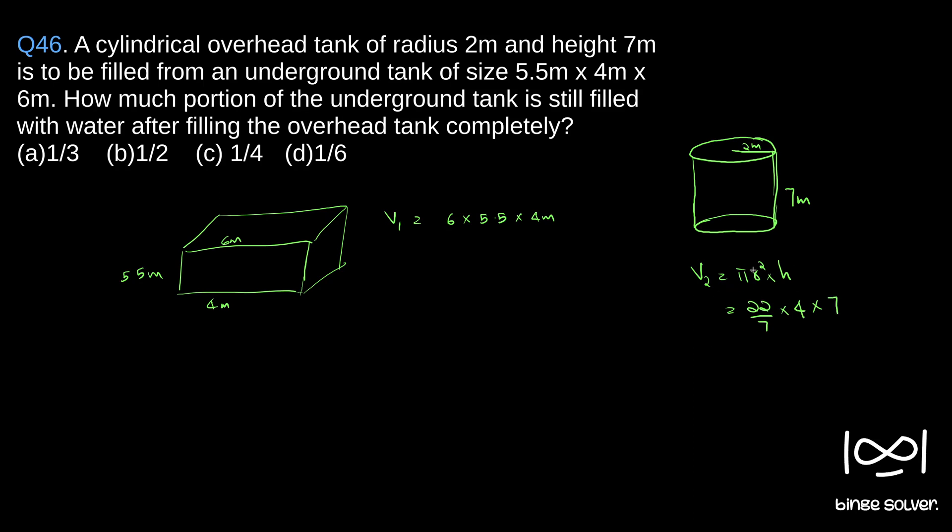in questions like this, the 7 will probably cancel out with some values, otherwise it will give fractions and a complicated answer. Usually it cancels out, so keep that in mind. Here, volume V2 is 22 × 4. If you observe, V1 is 5.5 × 4 equals 11 × 2, so 6 × 22. This is